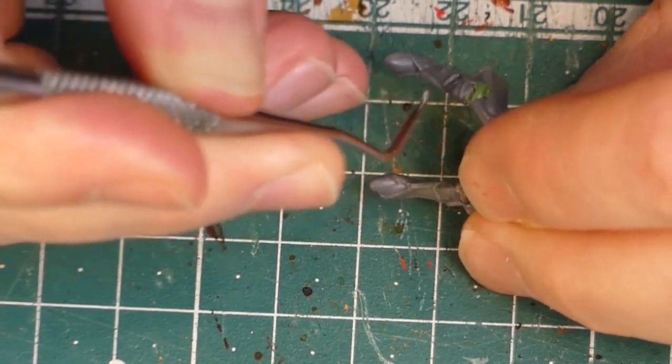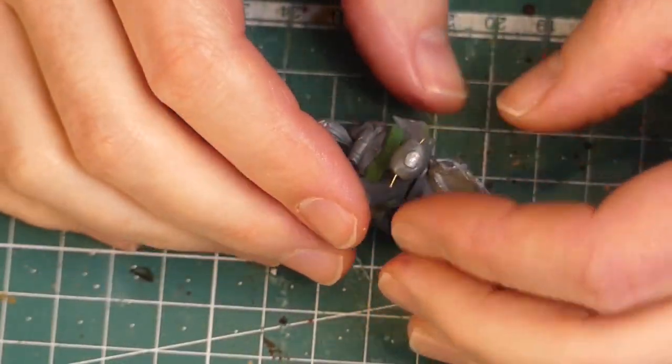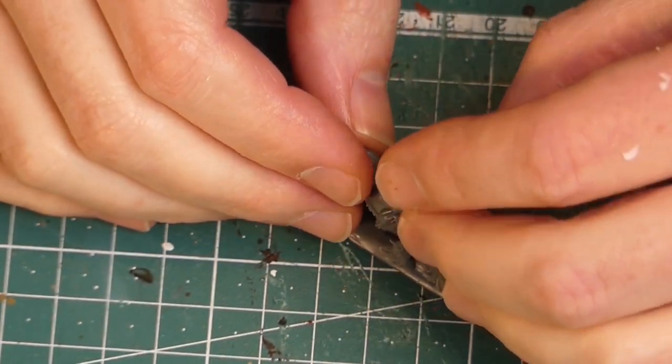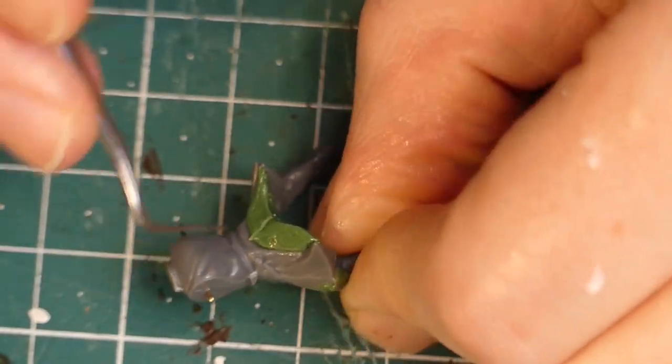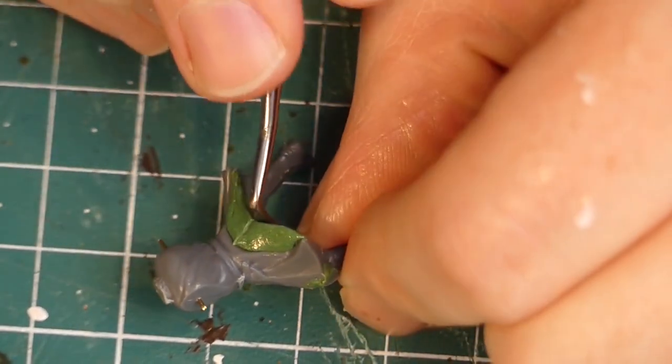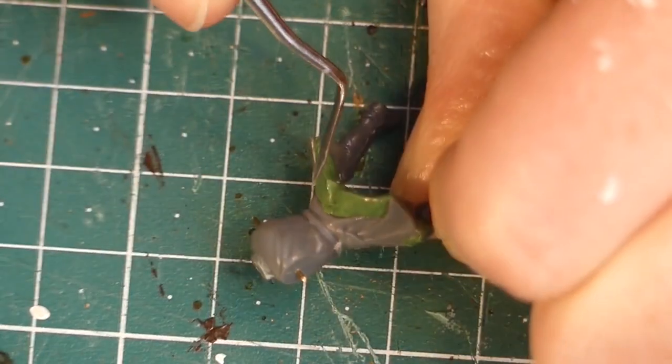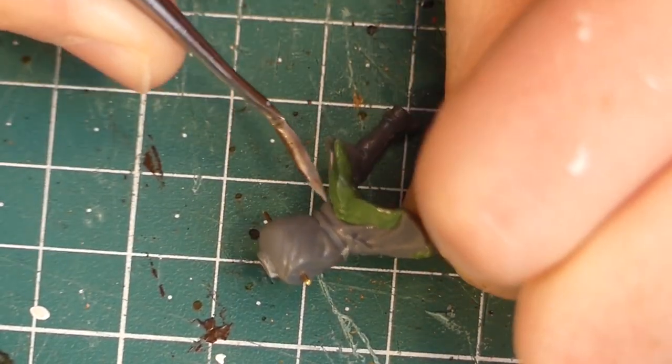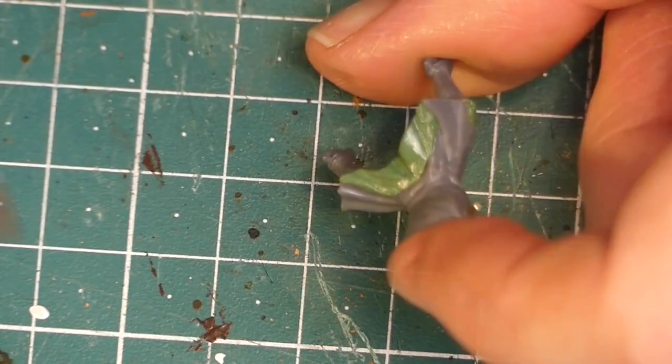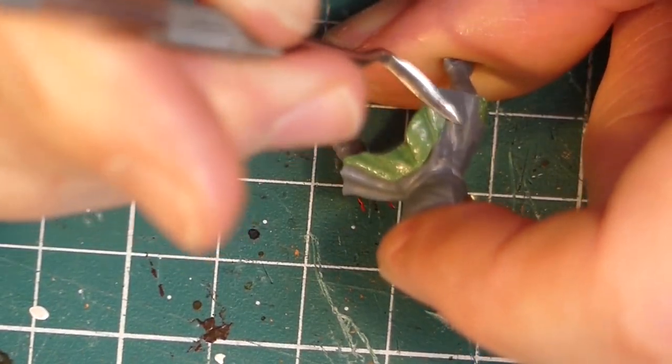Now it's time to remodel the tabard. So it's green stuff time. With this I always use a little bit of hand lotion. The hand lotion keeps the material from sticking to my fingers and to the sculpting tool. I place the green stuff between the legs of the miniature and press it down into the saddle. By that way it adapts the shape of the saddle and after that I start modeling the tabard.